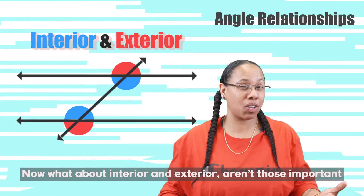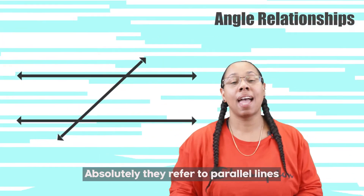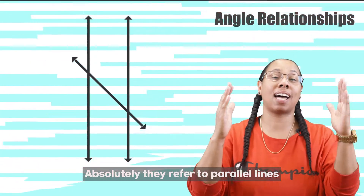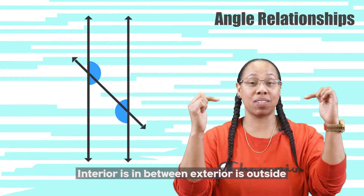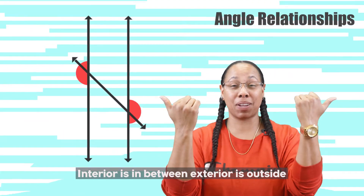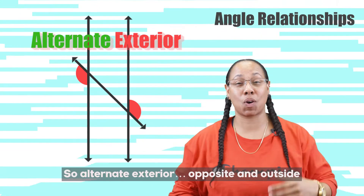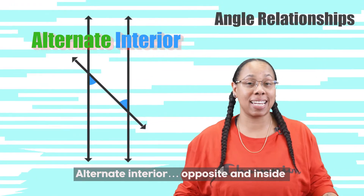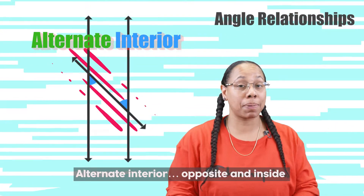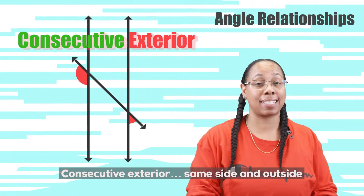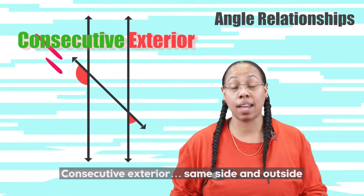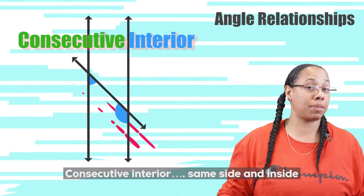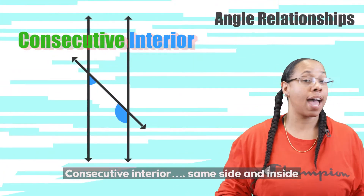What about interior and exterior? Aren't those important? Absolutely, they refer to parallel lines. Interior is in between, exterior is outside. So alternate exterior: opposite and outside. Alternate interior: opposite and inside. Consecutive exterior: same side and outside. Consecutive interior: same side and inside.